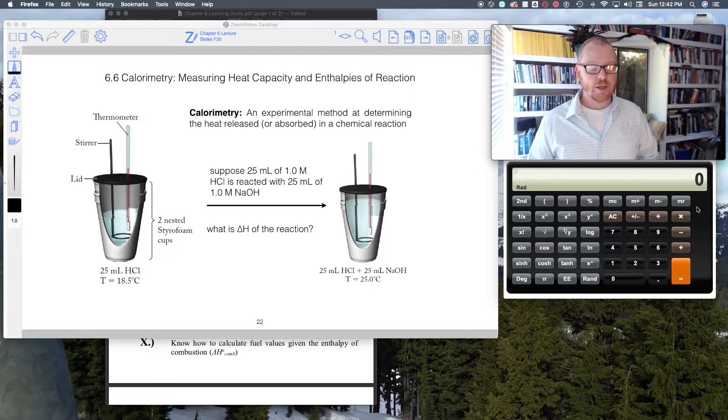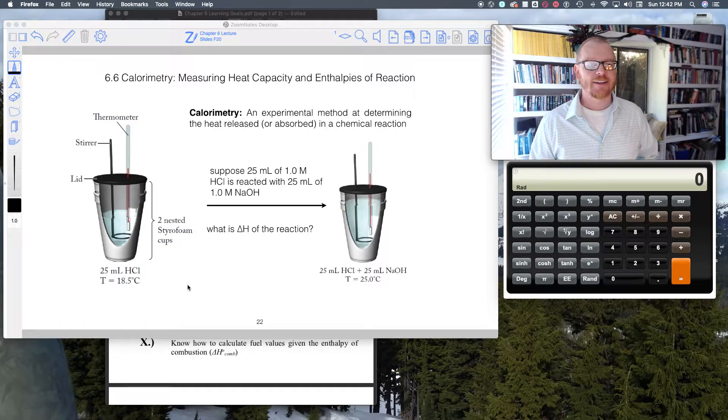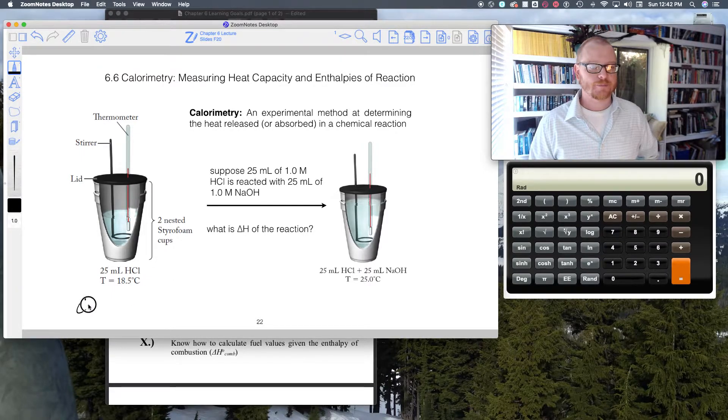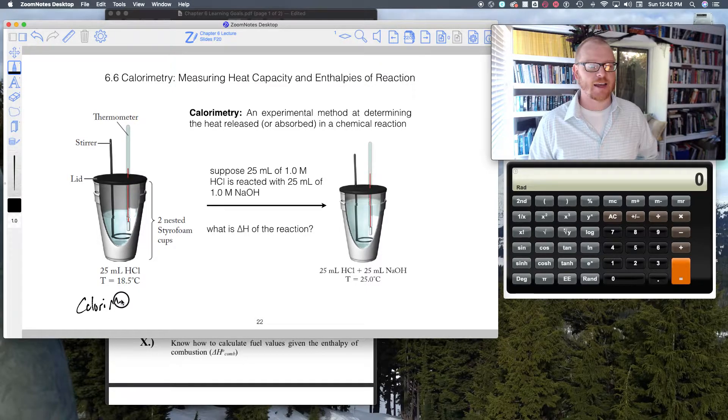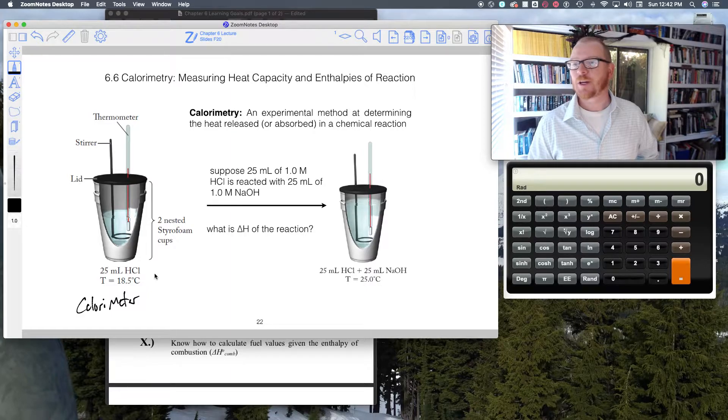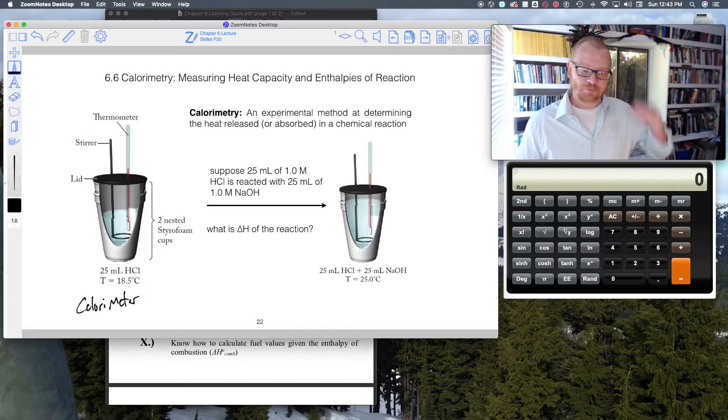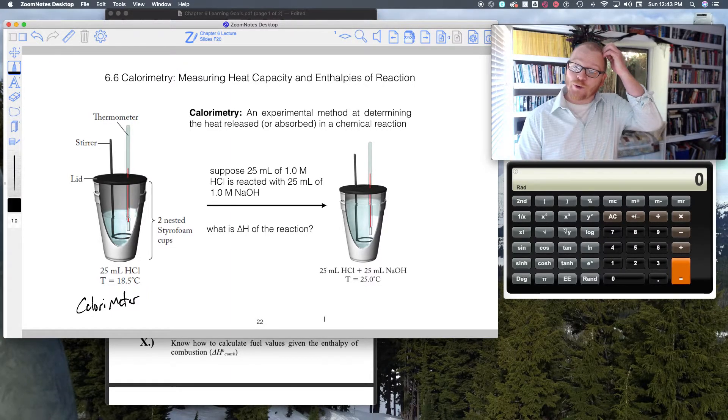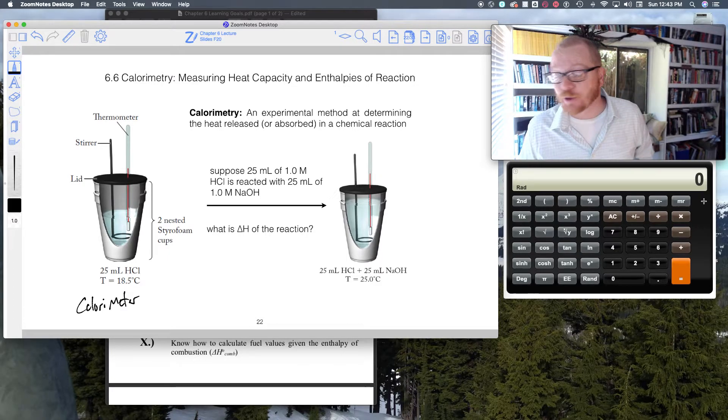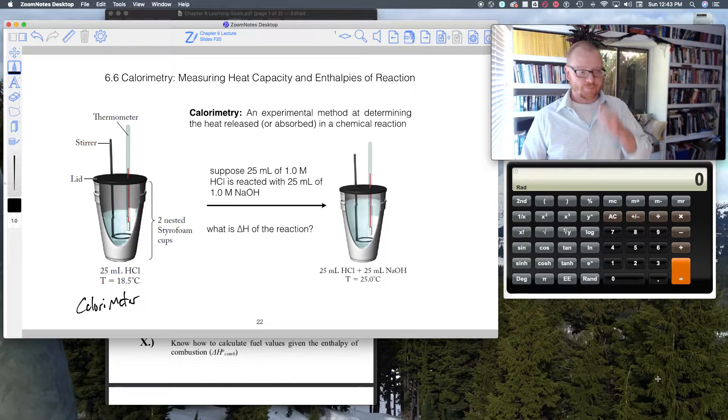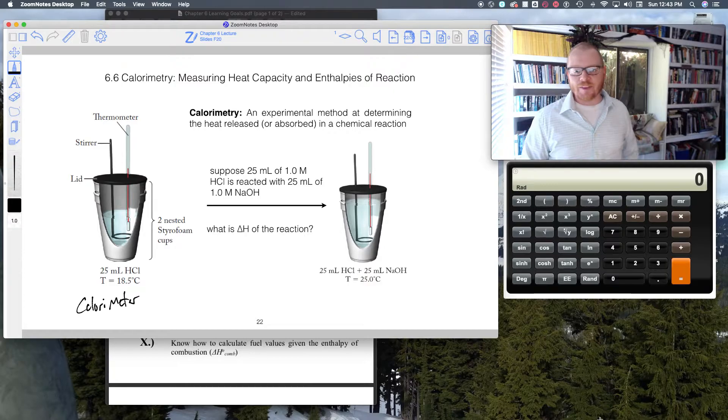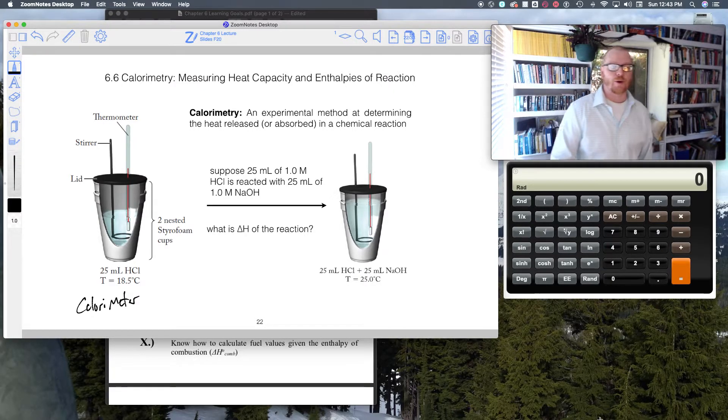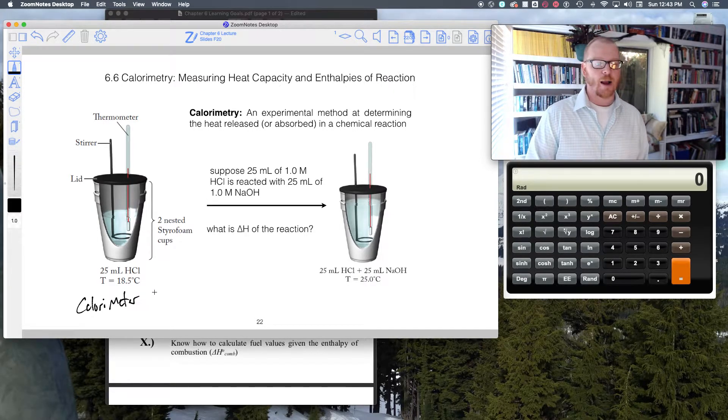Here is the process known as calorimetry. That's an experimental method that determines the heat released or absorbed during a chemical reaction. Here is a nice fancy high-tech calorimeter. I'm joking when I say that because it's just like two styrofoam cups to make it extra insulating. I'm going to show you what a real calorimeter looks like in a moment.